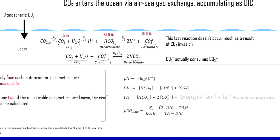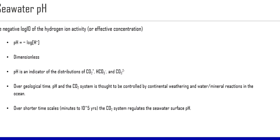pH is the negative log base-10 of hydrogen ion activity. It has no dimensions and is an indicator of the distributions of carbonate species. Over long time scales, pH is controlled by continental weathering reactions. Over shorter time scales, photosynthesis, respiration, dissolution, and precipitation control pH. The key insight is that pH is not a master variable — the carbonate system regulates pH, not the other way around. pH is the slave to the carbonate system.